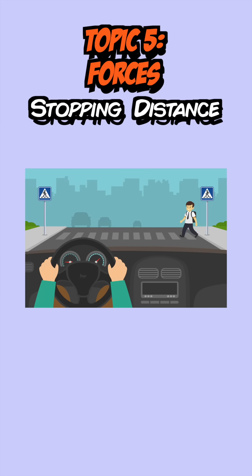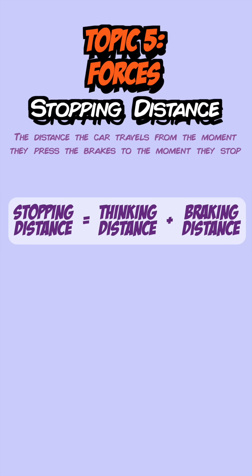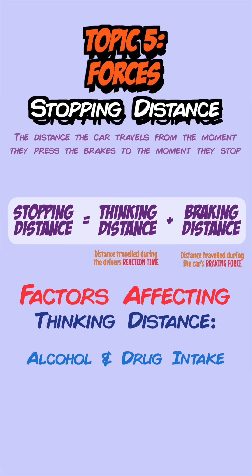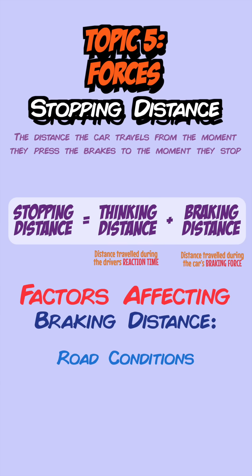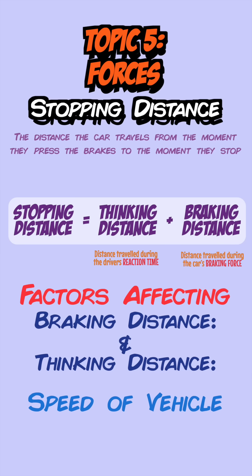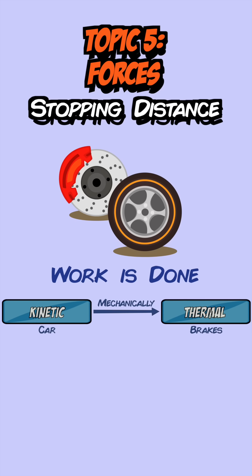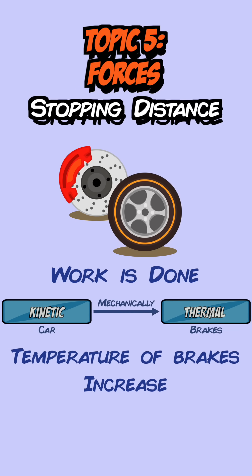Stopping distance is the distance a car travels from when the driver presses the brakes to when they stop. It is the sum of thinking distance — the distance traveled during the driver's reaction time — and braking distance — the distance traveled under braking force. Thinking distance is affected by alcohol, drugs, tiredness and distractions, while braking distance is affected by road or vehicle conditions. Speed affects both. When brakes are applied, kinetic energy is converted to thermal energy in the brakes, causing their temperature to rise.